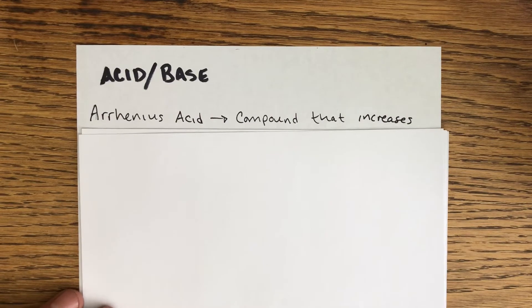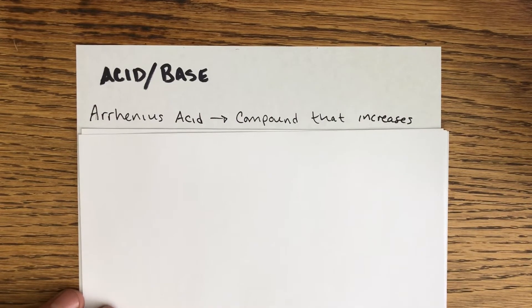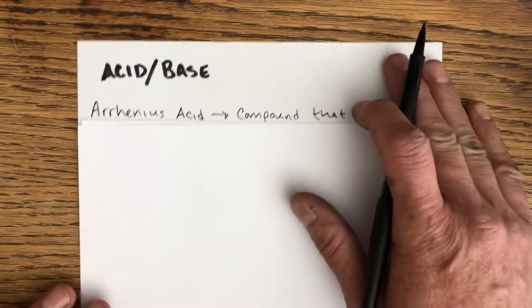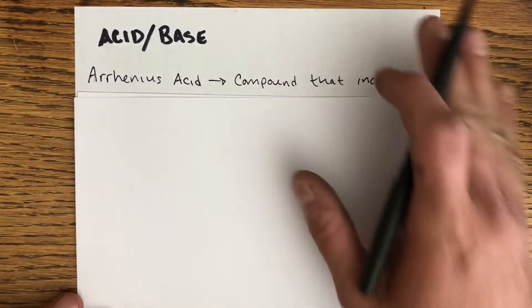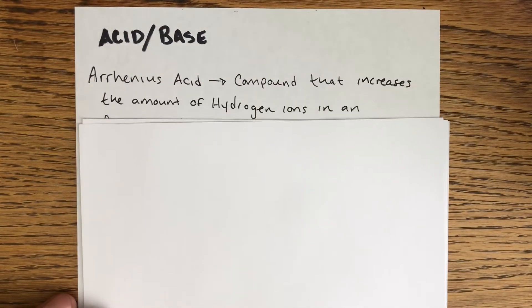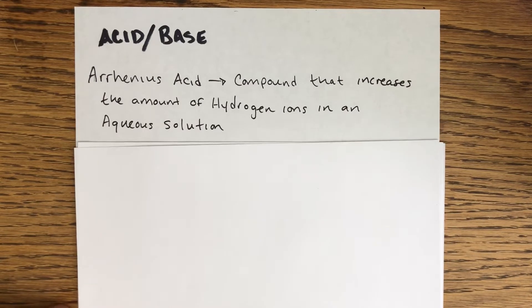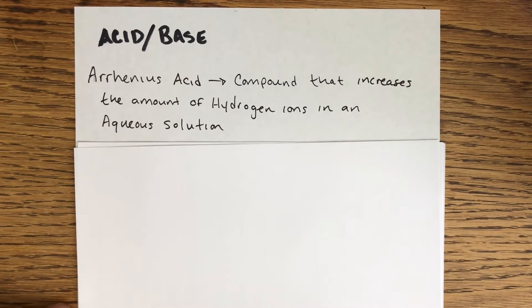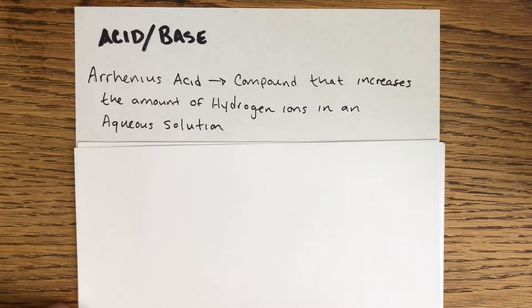We are working under this model known as the Arrhenius model. This is probably the most simple model that there is, but it's also a very useful one. Arrhenius acids have everything to do with hydrogen. An Arrhenius acid is a compound that will increase the amount of hydrogen ions in an aqueous solution.